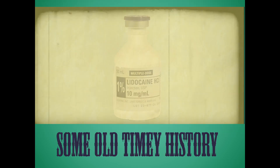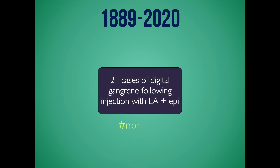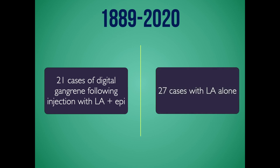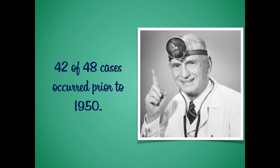Let's dig back further into this mystery. If you look through PubMed all the way back to 1889, there are in fact 21 cases of digital gangrene following injection of local anesthetic with epinephrine. On the other hand, there are 27 cases of gangrene when digital blocks were done with local anesthetic alone. So we have 48 cases total, and 42 of these occurred prior to 1950.